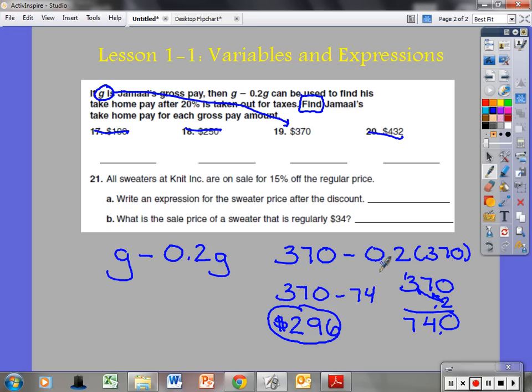Taxes are not fun, boys and girls. Now if I take a look, all sweaters at Knit Incorporated are on sale for 15% off the regular price. Write an expression for the sweater price after discount. So we don't know the regular price, so I'll call it P. We do know that it's the regular price minus 15%. Now what is 15% as a decimal? We know to change all percents to decimals. We could just take 15, and there's really a decimal right here, move over two places to the left. So it's 0.15 times that original price.